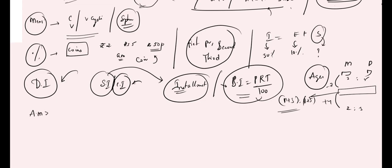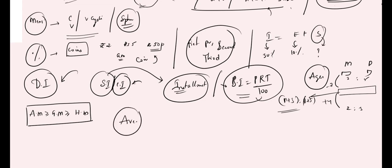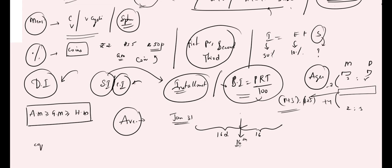Remember this identity: Arithmetic Mean ≥ Geometric Mean ≥ Harmonic Mean. Questions are asked based on this identity. For the averages concept, for example, in a January month with 31 days, if they give the average temperature for the first 16 days and the last 16 days, they ask for the temperature on the 16th day — the middle value.